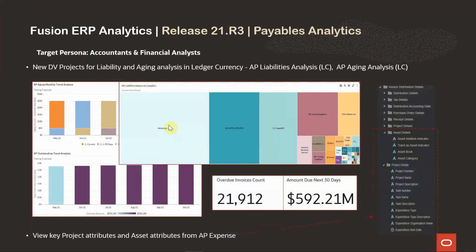Next, let's look at payables analytics. As I mentioned, we have introduced two new DV projects, one for liability and another for aging. Both are available in ledger currency. The DV project for liability is a continuation of the enhancements we are doing in the liability subject area. This provides customers the ability to look at liability balance by supplier and also look at detailed open invoices by supplier or by liability account as of a certain accounting date. The aging analysis gives you a monthly trend analysis and outstanding trend analysis and the ability to look at your overdue invoice count and amount.